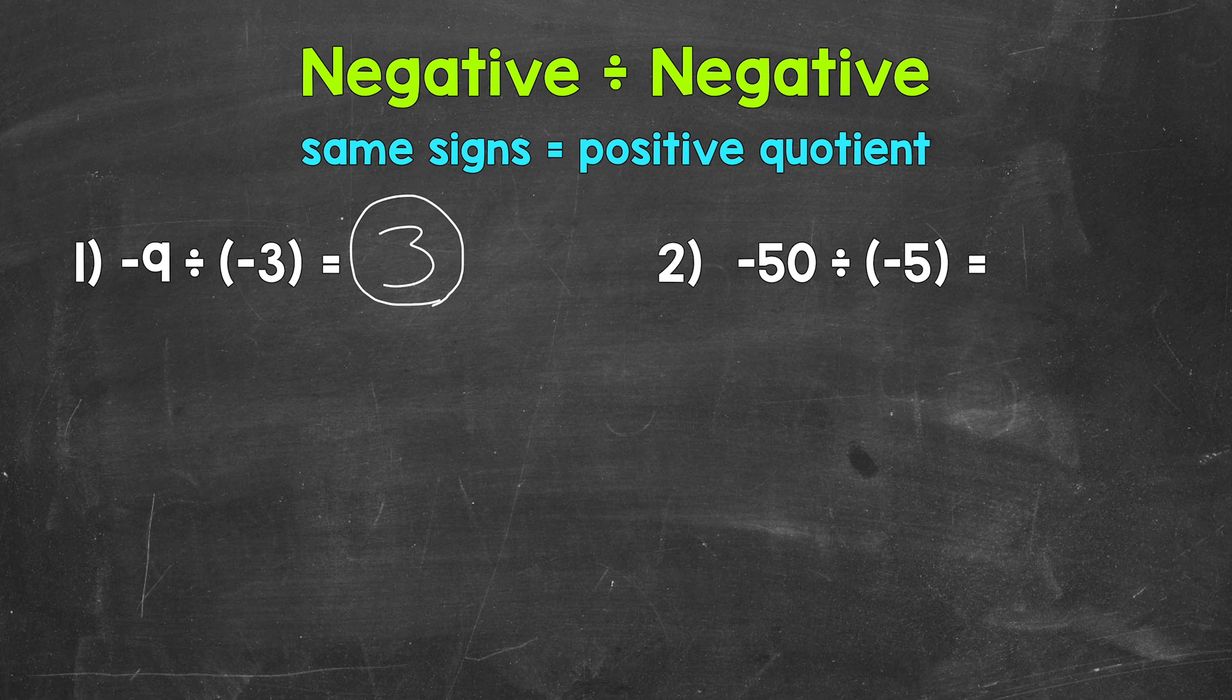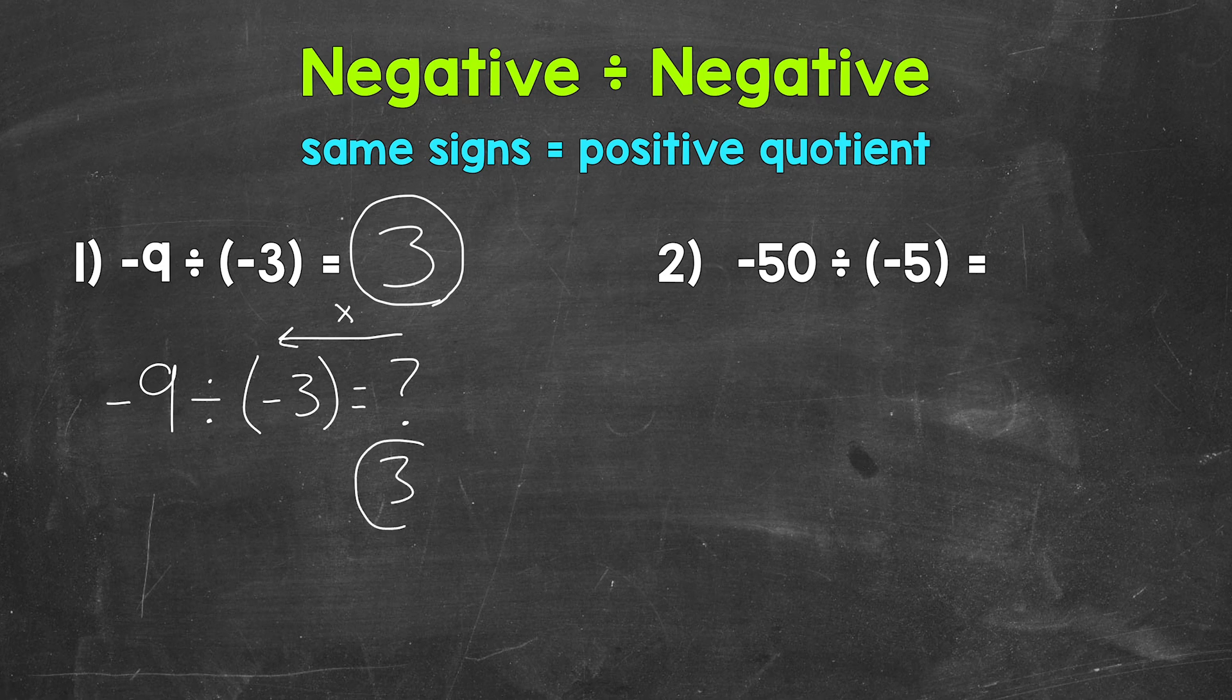Now to go off of that, division is the inverse or opposite of multiplication. So we can also go the opposite way using multiplication. So let me rewrite our problem here. Negative 9 divided by negative 3 equals what? So what times negative 3 will give us negative 9? Well, that positive 3.